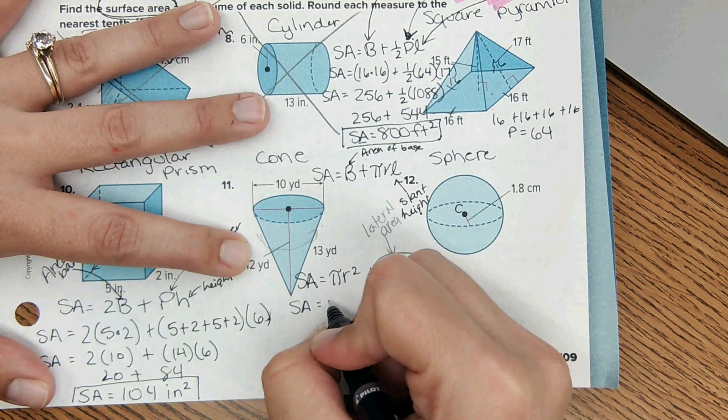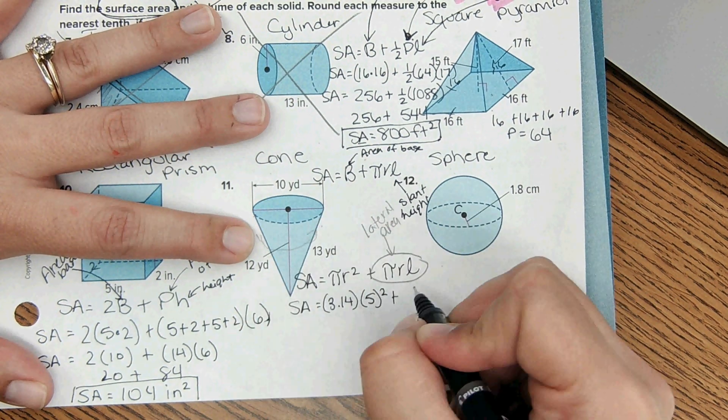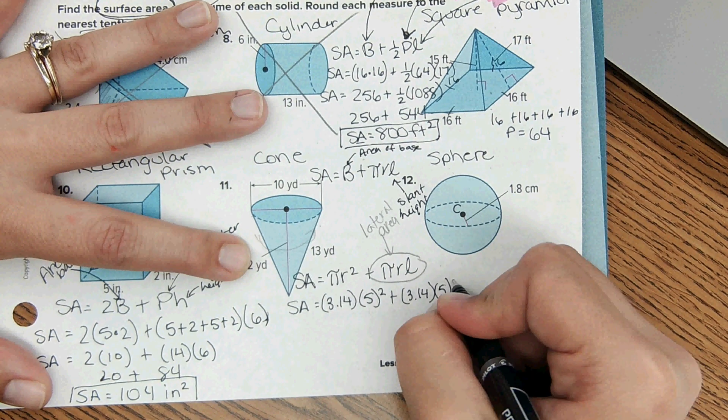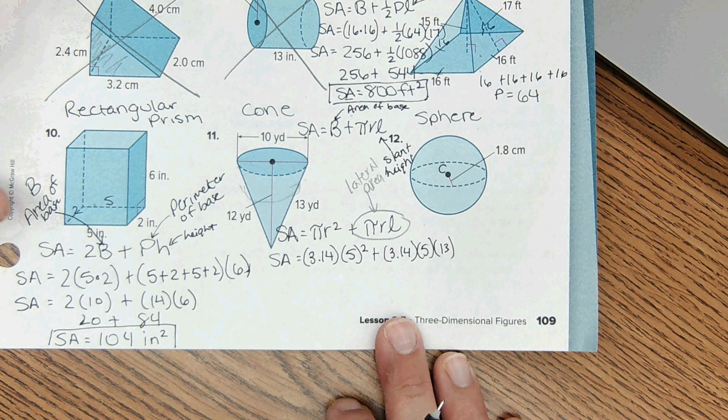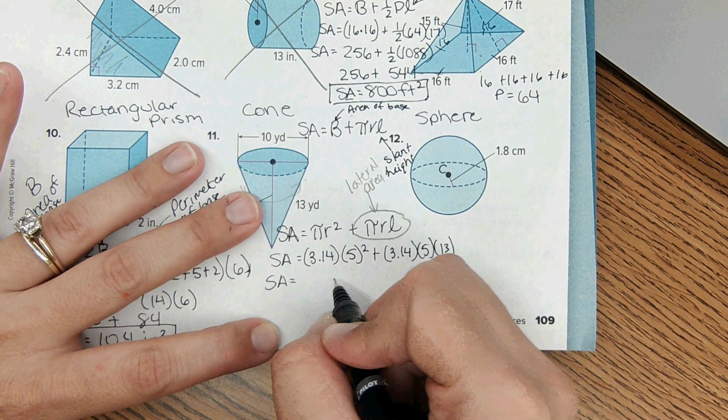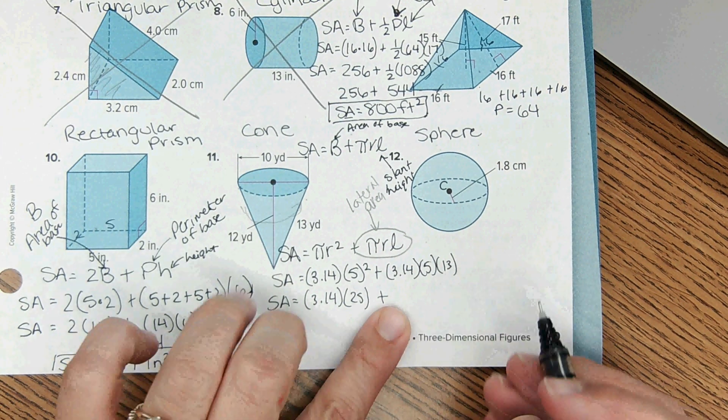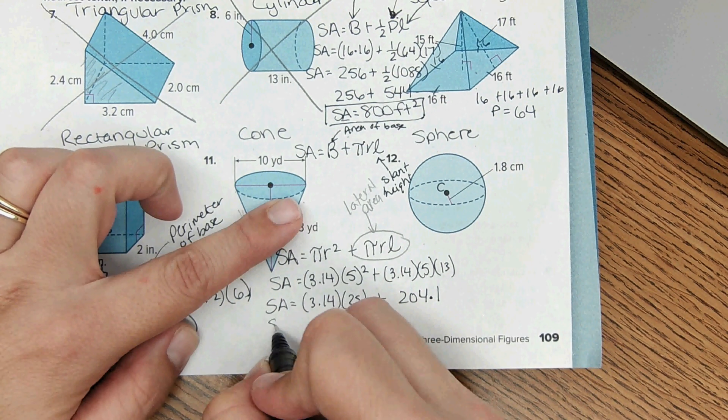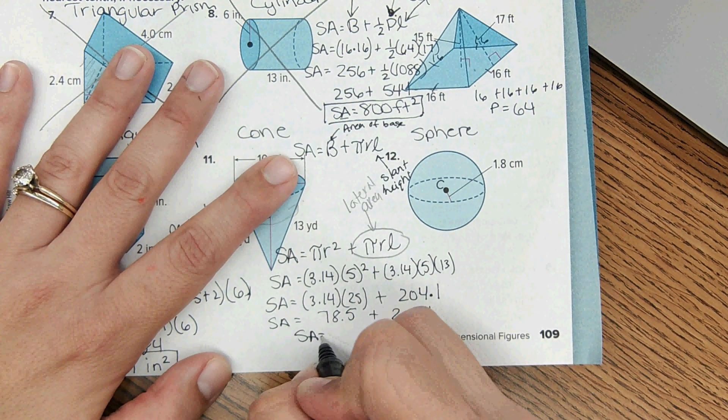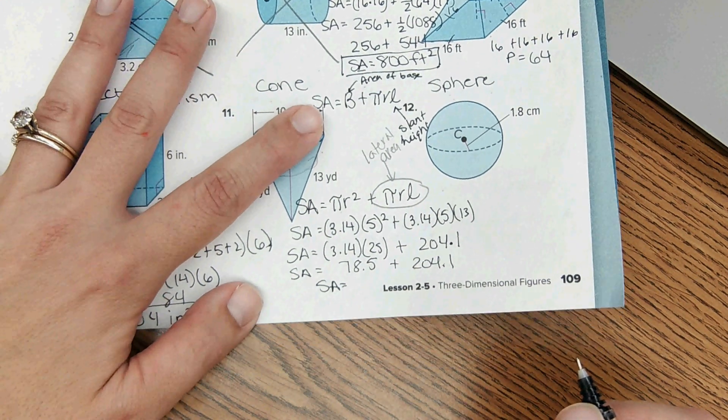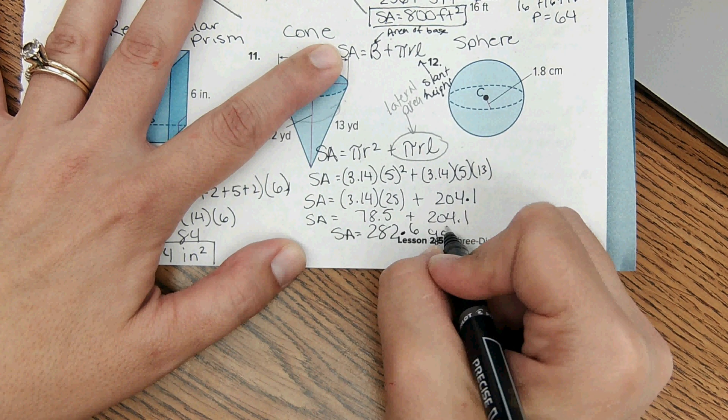Okay, so then once we have it set up, we plug in the numbers. We use 3.14 for pi. Radius would be 5 in this case, and then slant height is 13. And then we'll solve. Multiply these three numbers, it comes out to 204.1. 282.6 yards squared.